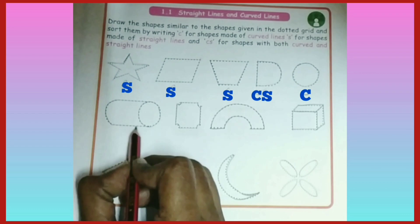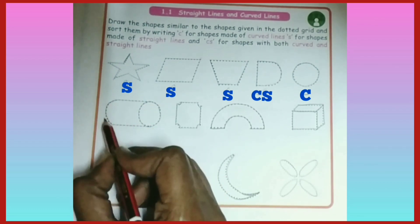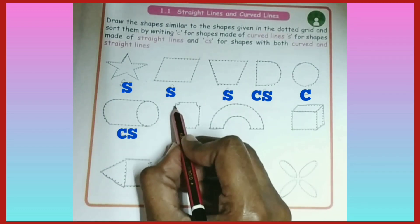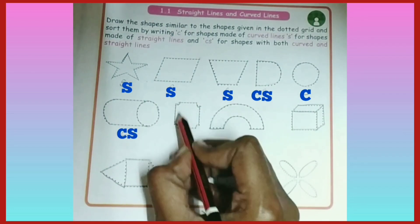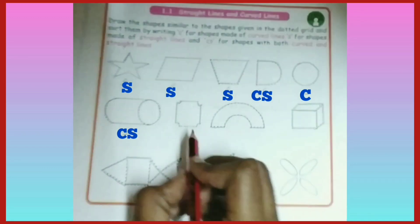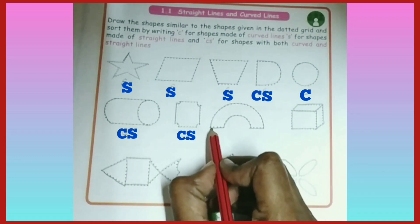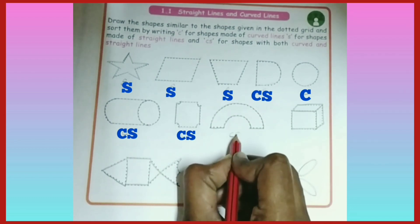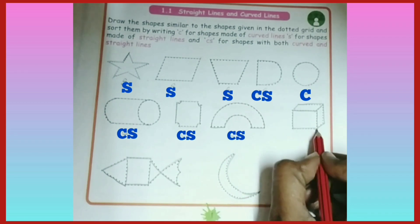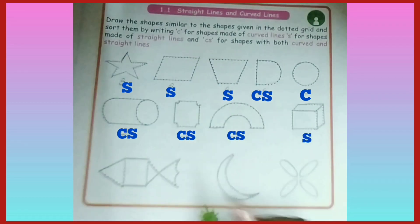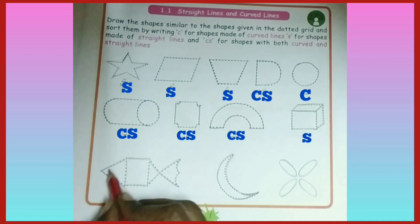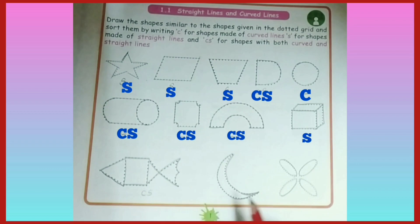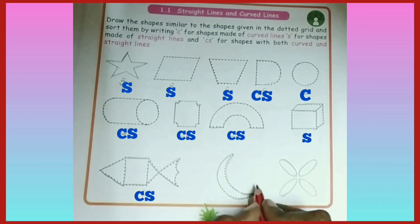Next, straight lines with curved lines - CS. Next, straight lines with curved lines; at the corner we have small curves, so CS. Next, straight lines and curved lines - CS. Next, straight lines. Next, straight lines and curved lines - CS. Here, curved lines.